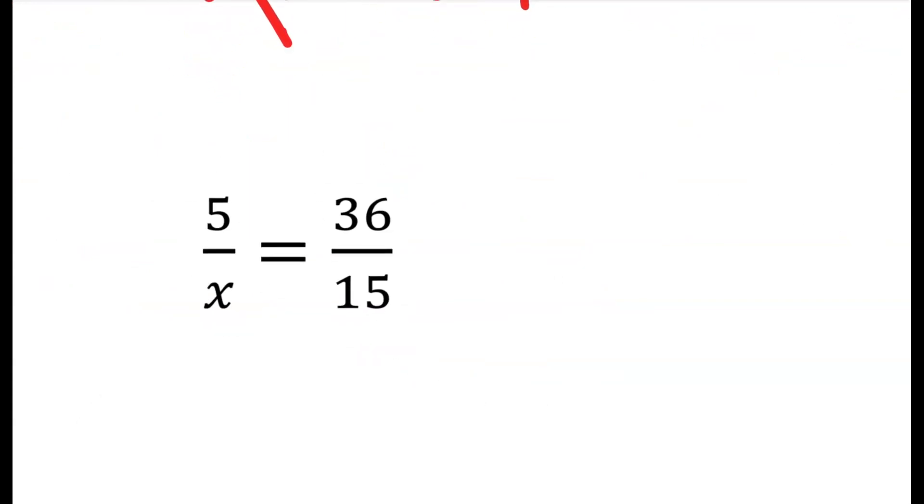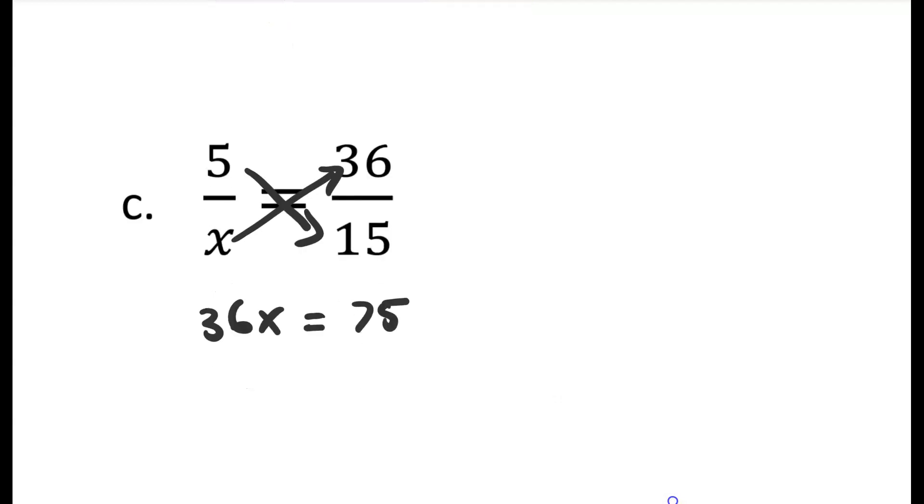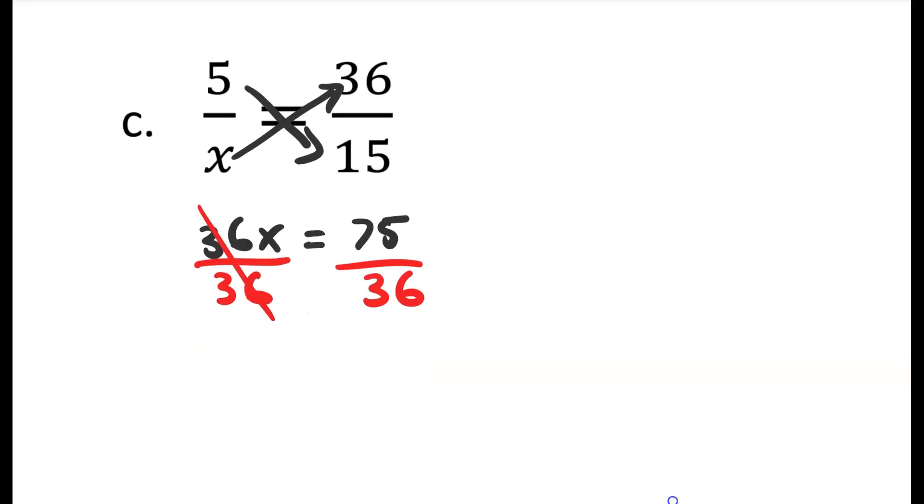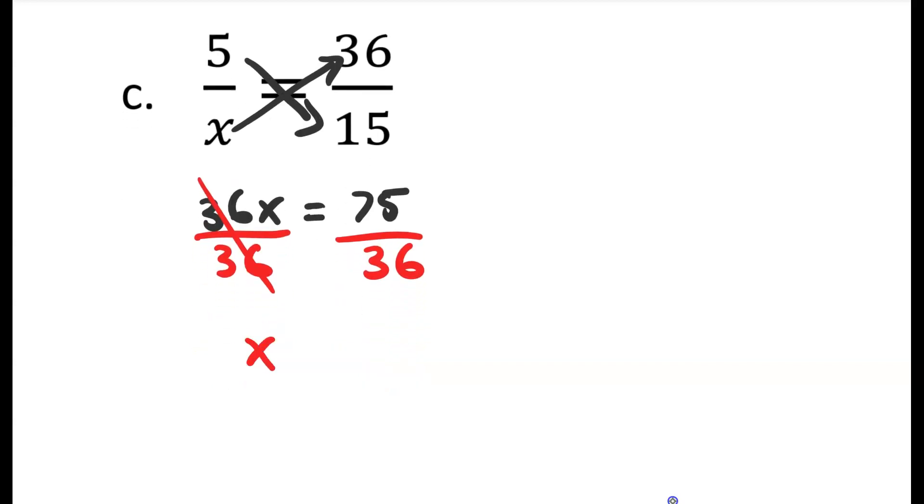In our third example, we have x on the bottom but we're still following the same steps. We cross multiply the five with the fifteen and the x with the thirty six, giving you thirty six x equals five times fifteen, which is seventy five. We isolate x by dividing by thirty six on both sides. That gives us x equals seventy five divided by thirty six, which is two point zero eight.